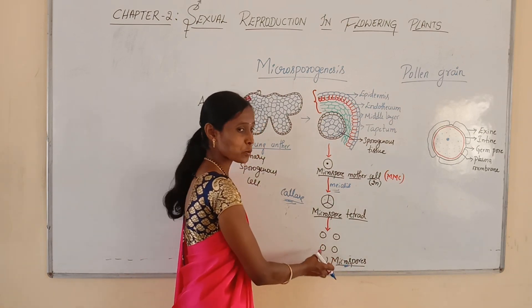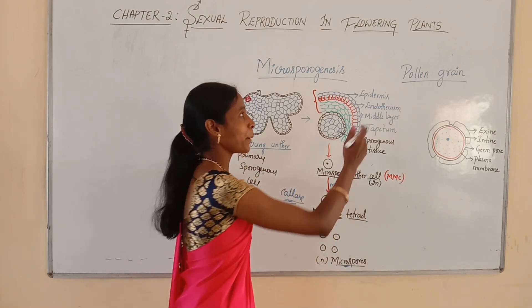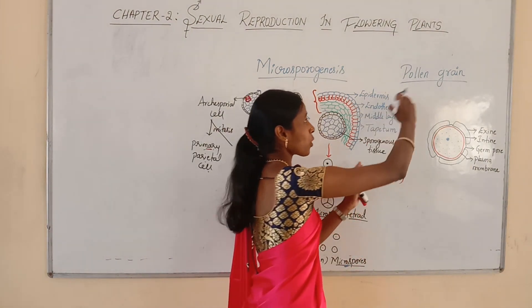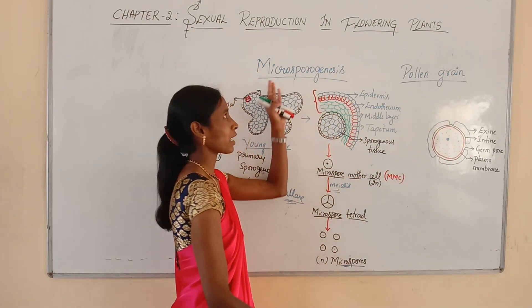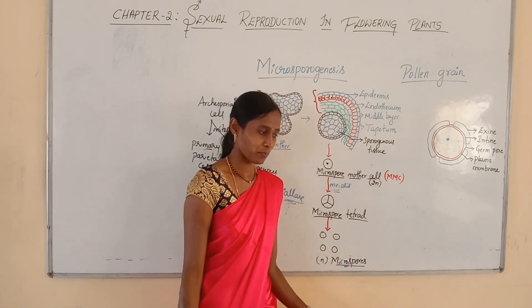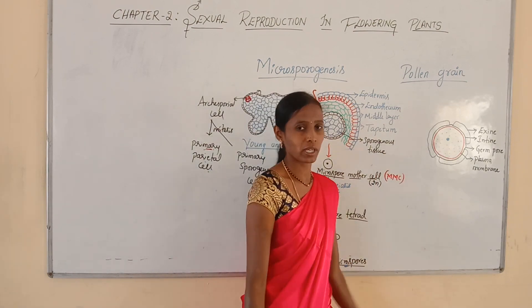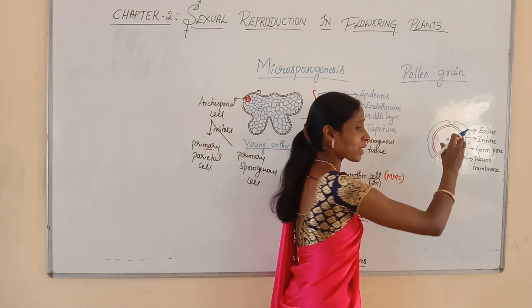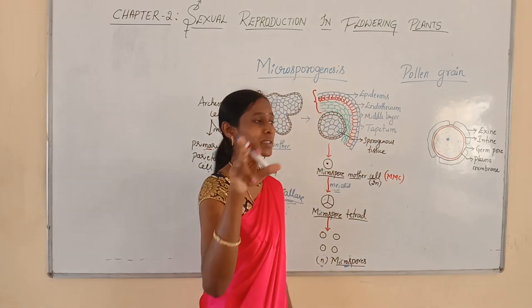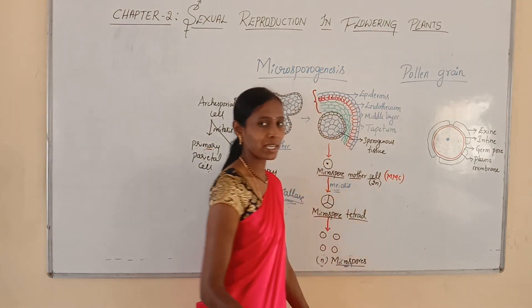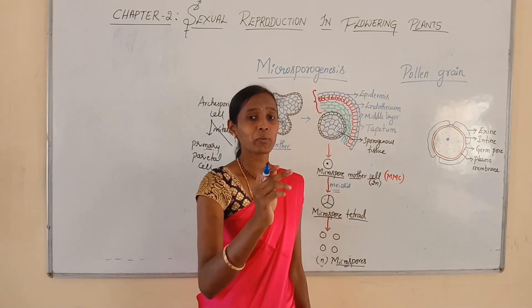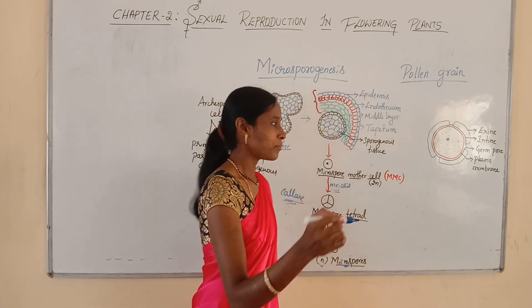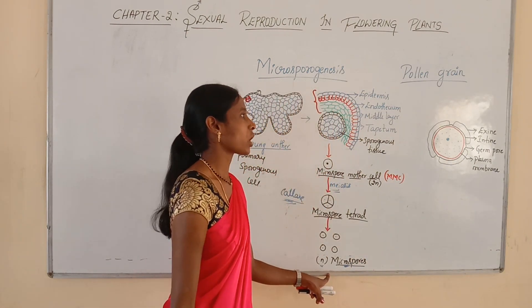What happens to these microspores later? The microspores will later develop into pollen grains, and pollen grains are the male gametophyte — the first cell of the gametophyte generation. We will talk about pollen grains in detail. Each microspore contains a haploid nucleus; the haploid microspores contain a haploid nucleus. Each microspore contains a nucleus along with cytoplasm, and the cytoplasm is surrounded by a prominent plasma membrane.